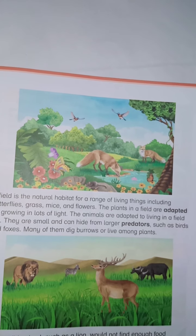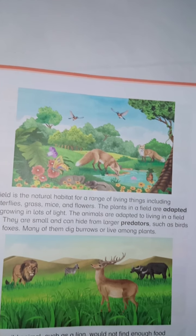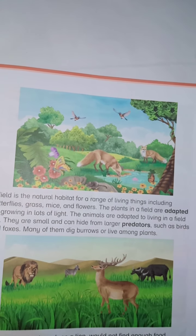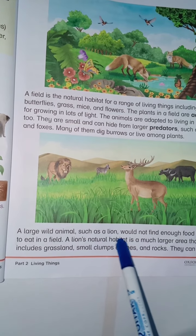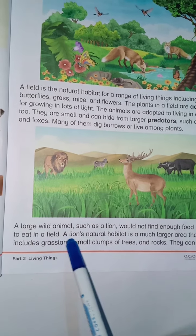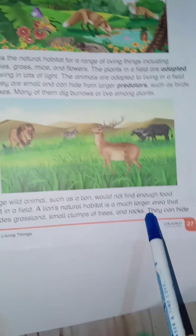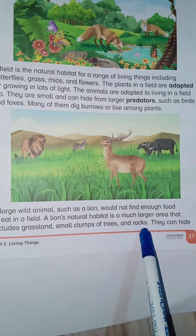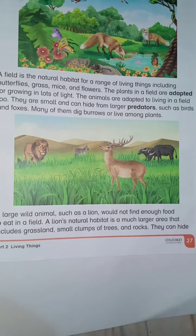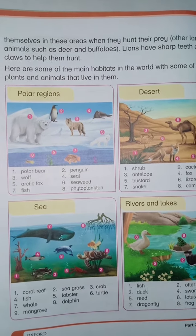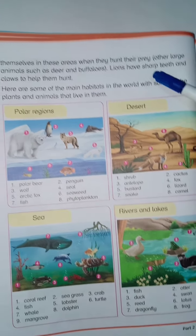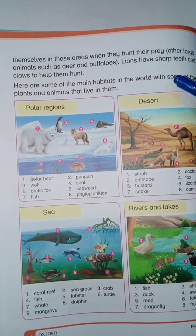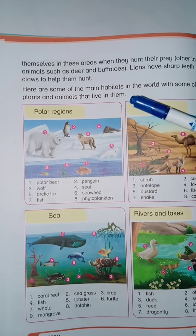Small animals can hide themselves in the green grass and behind plants. A large wild animal such as a lion would not find enough food to eat in a field. The lion's natural habitat is a much larger area that includes grasslands, small clumps of trees, and rocks. They can hide themselves in these areas when they hunt their prey. Other large animals such as deer and buffalo — lions have sharp teeth and claws to help them hunt.